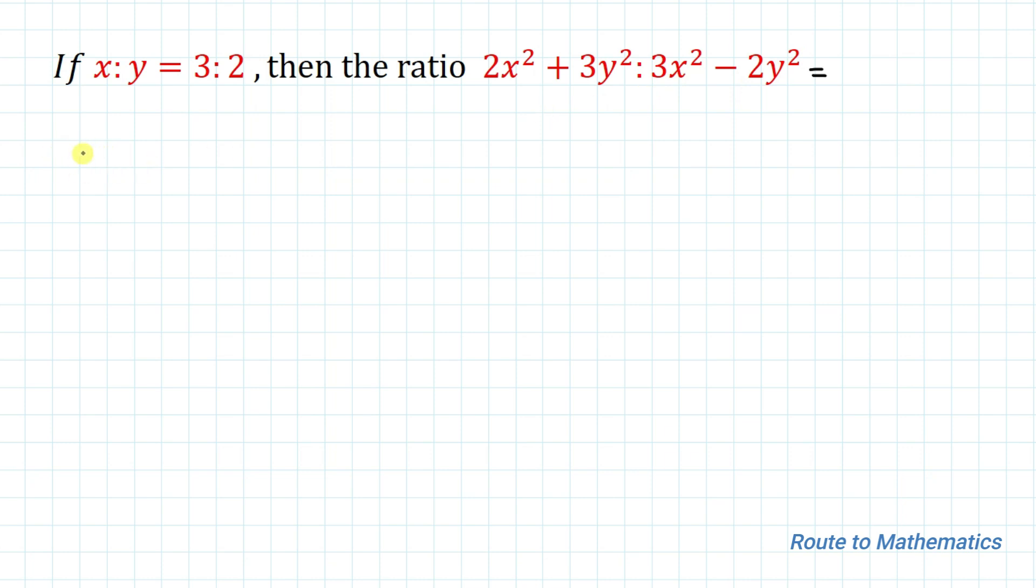So without any delay, let's start the solution. So we have one value that is x is to y equals to 3 is to 2. We can write this x by y equals to 3 by 2.